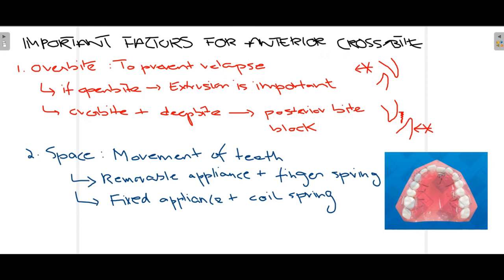When talking about correcting anterior crossbite, some important factors must be noted. Firstly, overbite — after correcting crossbite, developing an adequate overbite is very important. As you can see in this diagram, if overbite is not present, the vertical overlap between the incisors is insufficient and the maxillary incisor would tend to move backwards, causing relapse. So when anterior crossbite has been corrected, development of overbite is very important.